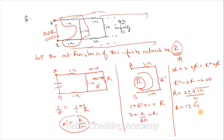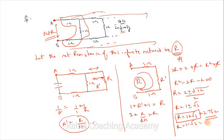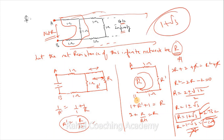R has two possible values: 1 + √3 and 1 − √3. If R = 1 + √3, the network resistance is approximately 2.732 ohms. But R = 1 − √3 gives a negative value, which is not physically possible. So the correct answer is R = 1 + √3 ohms.